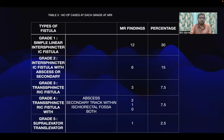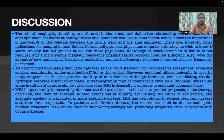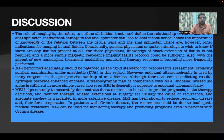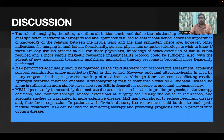The role of imaging is to outline all hidden tracts and define the relationship of the tract to the anal sphincter, as inadvertent damage to the anal sphincter can lead to incontinence. MRI performed adequately should be regarded as the gold standard for preoperative assessment, replacing surgical examination under anesthetic. Although there are some conflicting results, hydrogen peroxide-enhanced endoanal ultrasonography may be comparable with MRI. MRI not only helps accurately demonstrate disease extension but also predicts prognosis, guides therapy decisions, and monitors therapy.